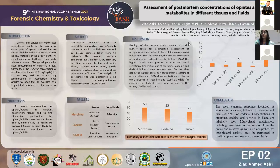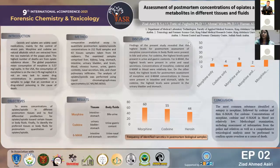Analysis of all samples was performed by LC-MS/MS. Our findings show that the highest levels for post-mortem morphine concentration in body fluid were present in bile and urine. For codeine, the highest levels were present in urine and gastric content. And 6-MAM, which is the first metabolite of heroin in the body, had the highest levels in urine and nasal secretion.